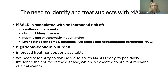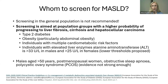We need to identify and treat subjects with MASLD early. Screening in the general population is not recommended, but we must screen groups with higher probability of progressing to fibrosis, cirrhosis, and hepatocellular carcinoma: type 2 diabetes patients, subjects with obesity (particularly abdominal obesity), individuals with multiple cardiometabolic risk factors, and individuals with elevated liver enzymes. Lower ALT thresholds are proposed: more than 33 units per liter for males and more than 25 units per liter for females.